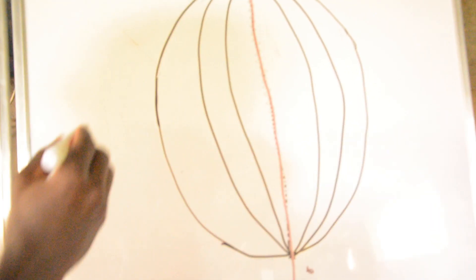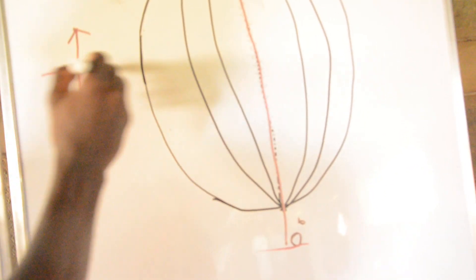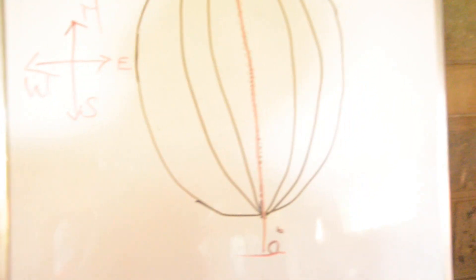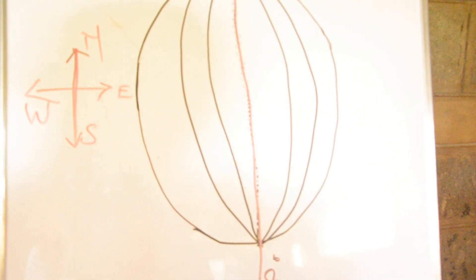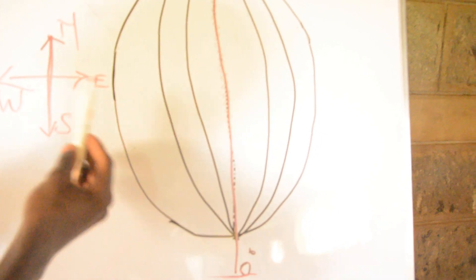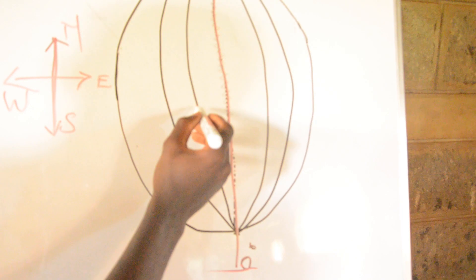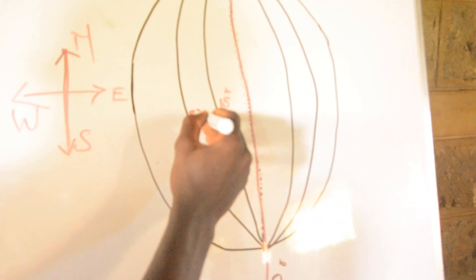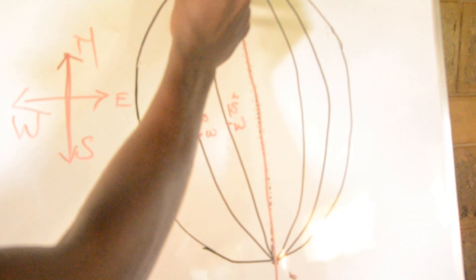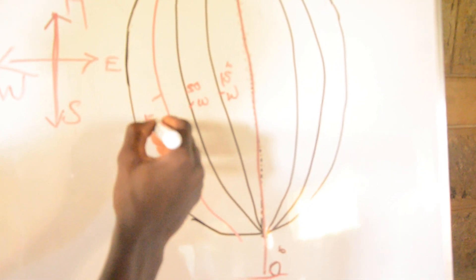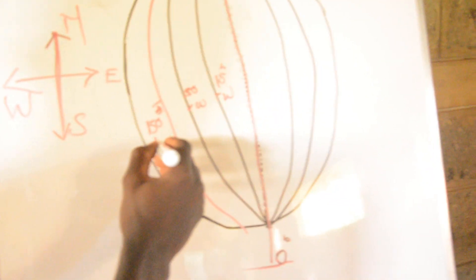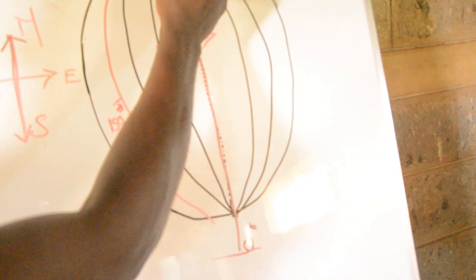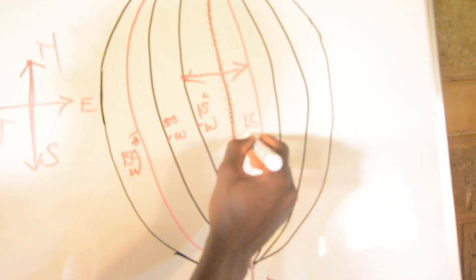Again I'll draw another compass here. This is north, this is south, this is east, this is west. I want you to imagine the Greenwich Meridian is this line pointing to north and south. All those points are either on the east or on the west of the Greenwich Meridian. So this point is 15 degrees west of the Greenwich Meridian, and to the other side this point marks 15 degrees east.